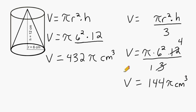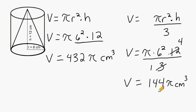Now if you had to use 3.14 for pi, what you would do is take 432 and multiply that by 3.14 to find the volume of the cylinder. And for the cone, you would multiply 144 by 3.14 to find the volume of the cone. And that is how you find the volume of any cylinder or of any cone.